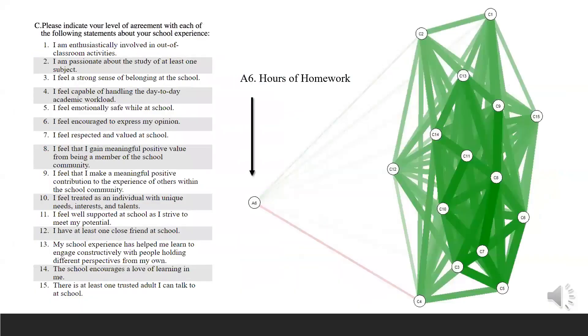This next slide depicts the connection of hours spent on homework, A6, with all 15 attitudinal measures. All section C measures are correlated to one another positively, as reflected in the green lines connecting the nodes. Negative correlation is indicated by red lines.